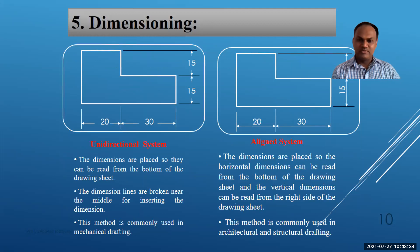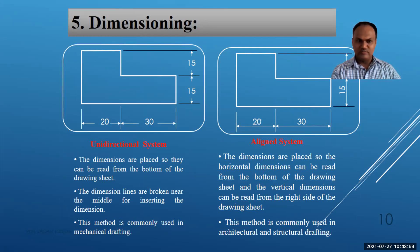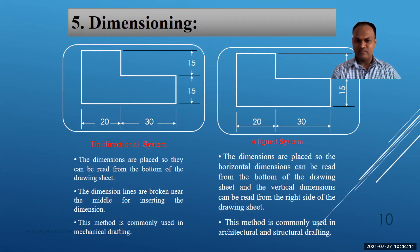Now we look at dimensioning techniques. The first is the unidirectional system, where numbers are written in only one direction — horizontally. Dimensions are placed so they can be read from the bottom of the drawing sheet. The dimension lines are broken near the middle for inserting the dimension value. This method is commonly used in mechanical drafting.